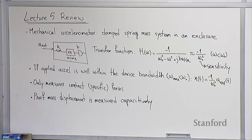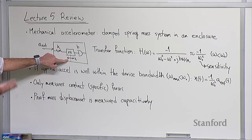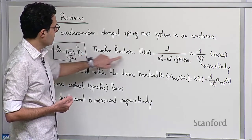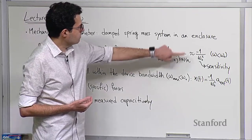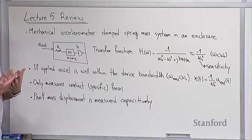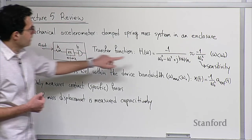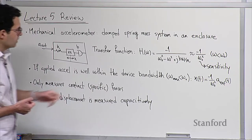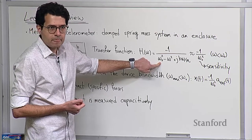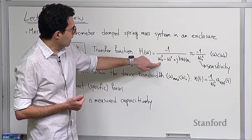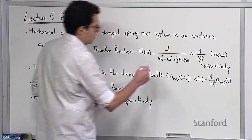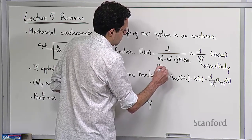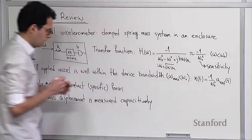Because this is a spring-mass system, you can think of it as a low-pass filter. If you apply very high frequency inputs, you would not get a response. Every device has some bandwidth. The transfer function we derived for this system, H of omega, is given by: H(ω) equals minus one over (ω₀² minus ω² plus jBω/M), where ω₀ is the resonance frequency that also determines the bandwidth of the system. It's related to the mass and spring constant — ω₀ equals the square root of K over M.